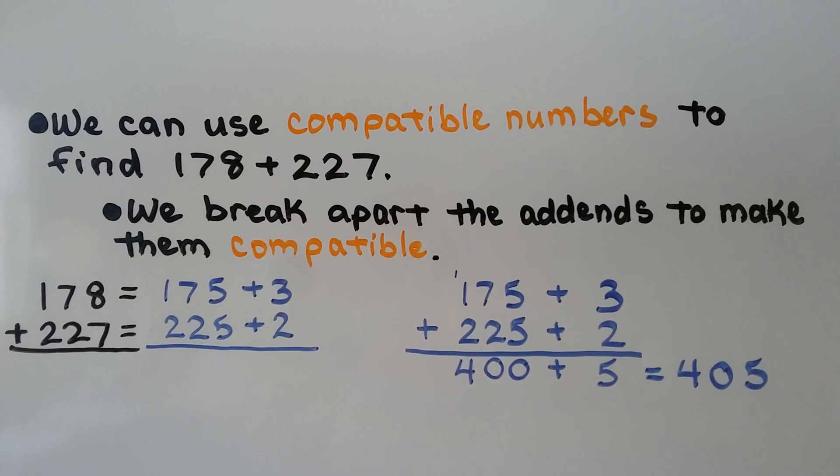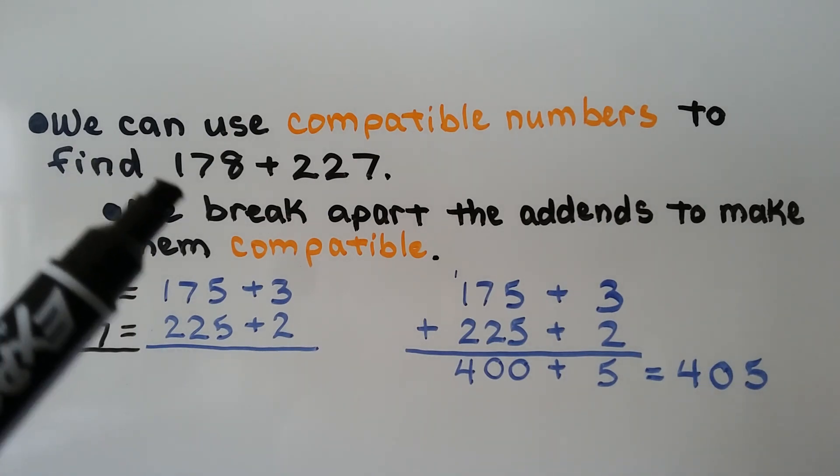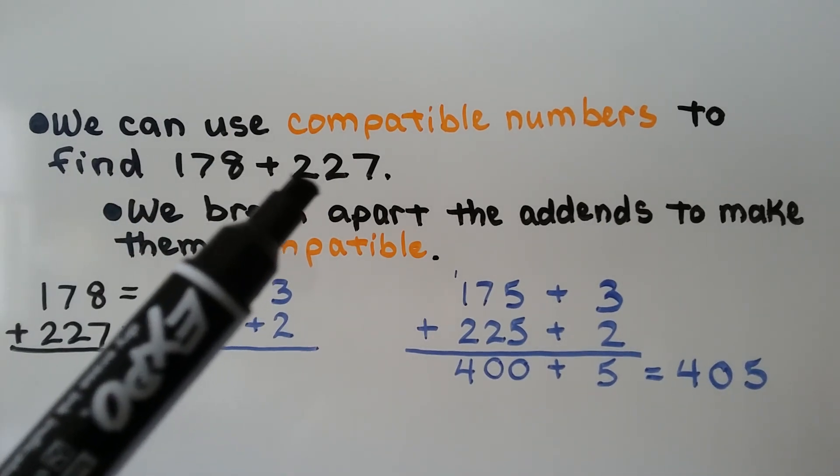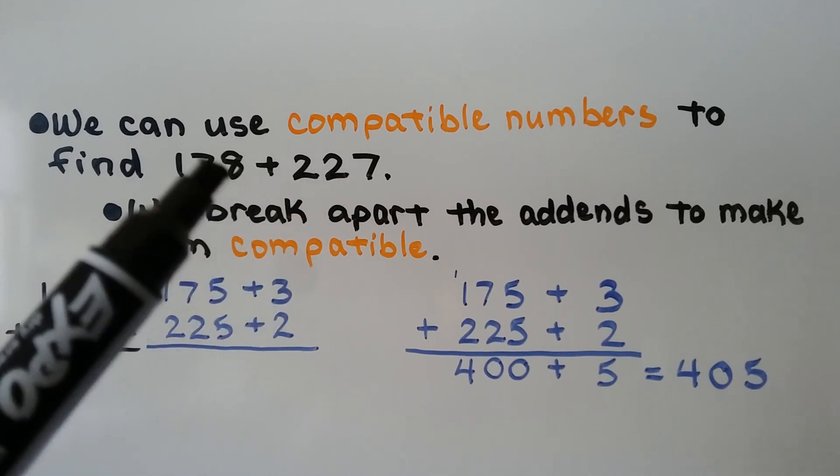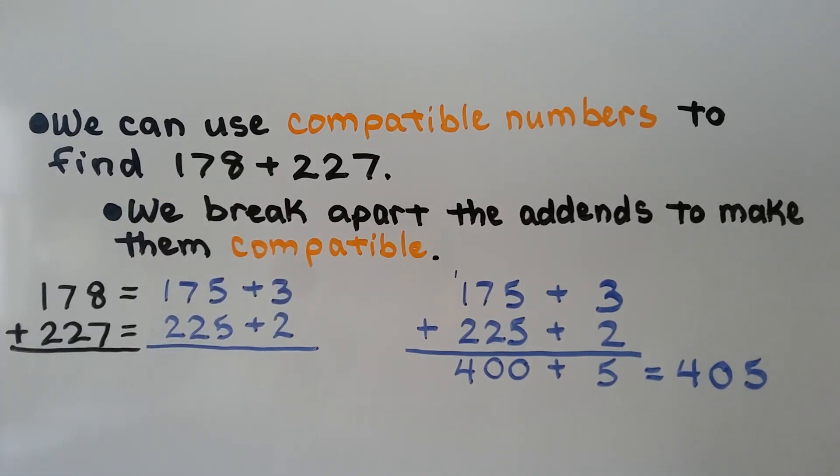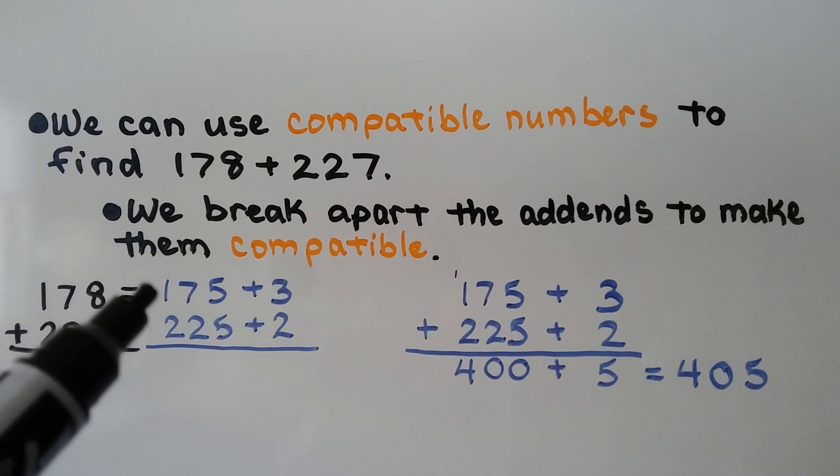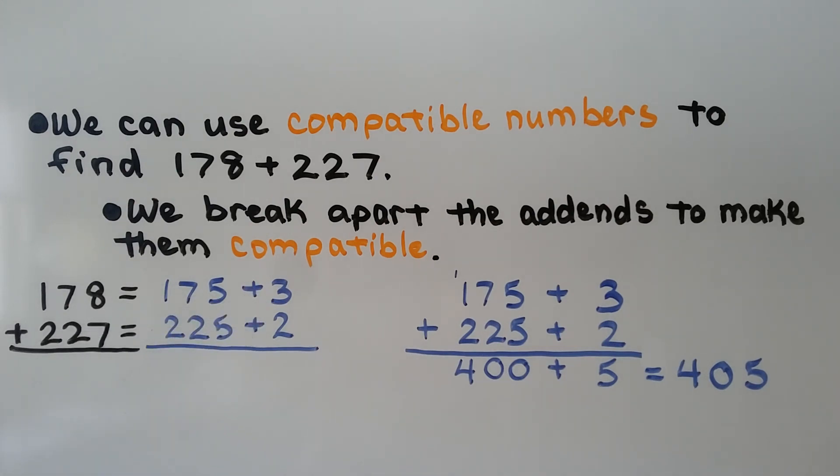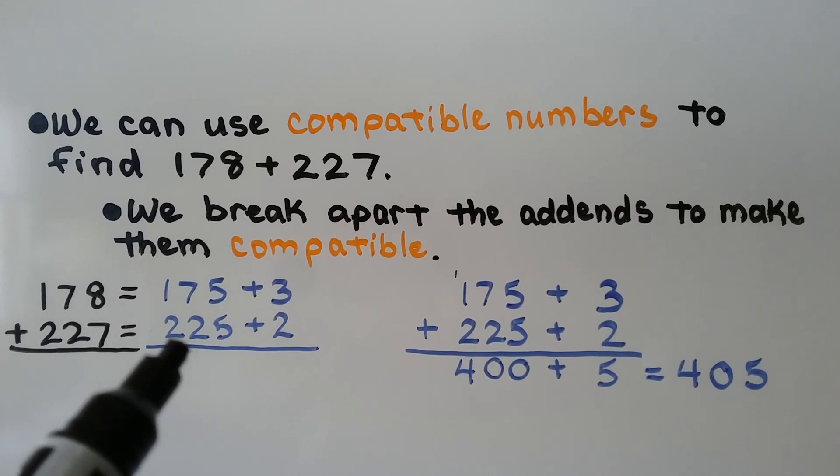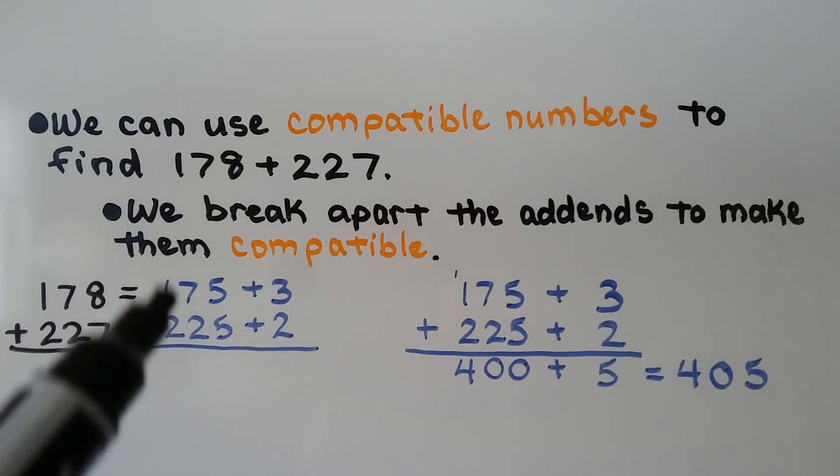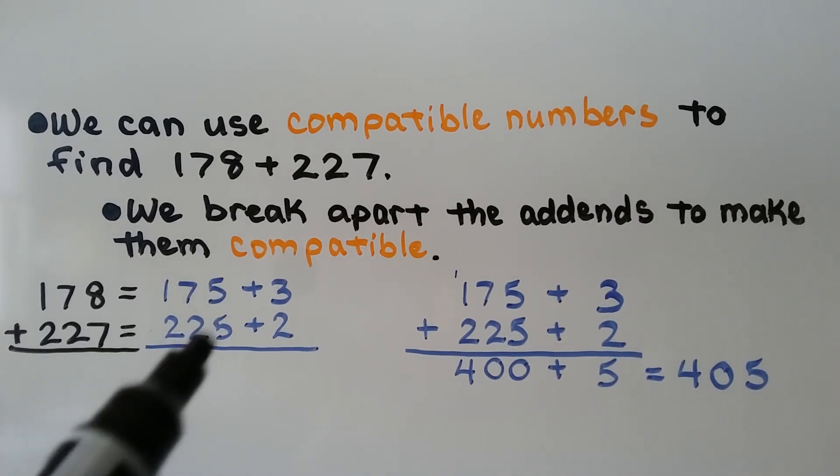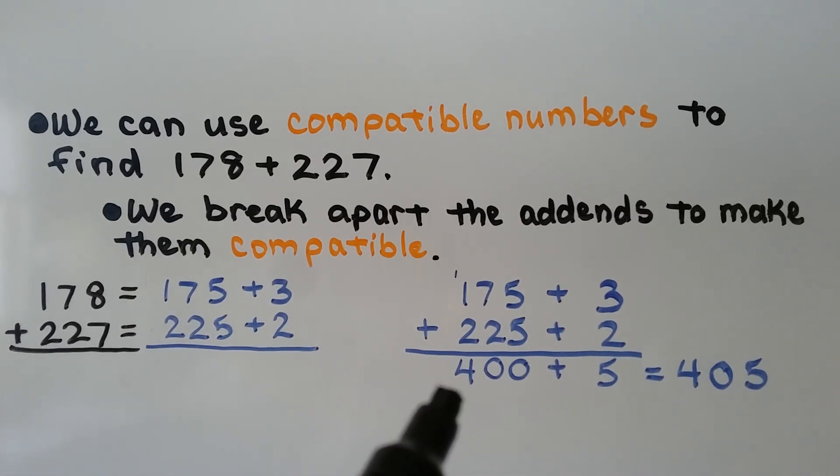We can use compatible numbers to find 178 plus 227. We're going to break these apart into compatible numbers. Then it will be easier to add them mentally. We have 178, that is equal to 175 plus 3 more. 227 is equal to 225 plus 2 more. We add these, and we get 400.